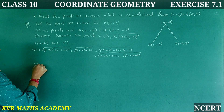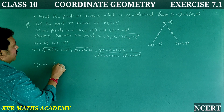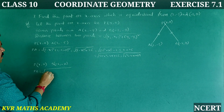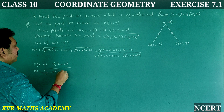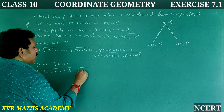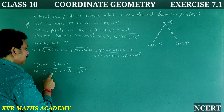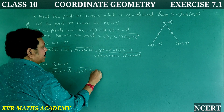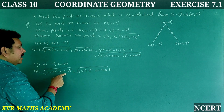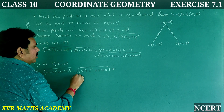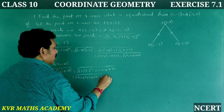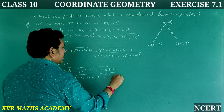PB = √[(−2 − x)² + (−9 − 0)²]. Expanding (−2 − x)²: 4 + x² + 4x, and (−9)² = 81. So PB = √[4 + x² + 4x + 81] = √[x² + 4x + 85].